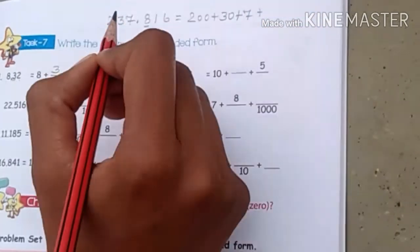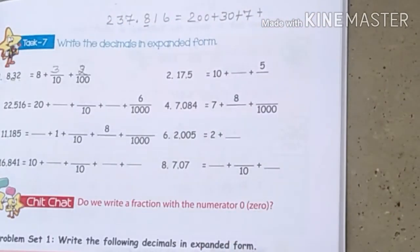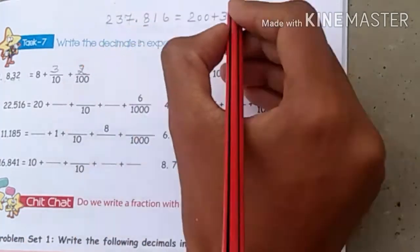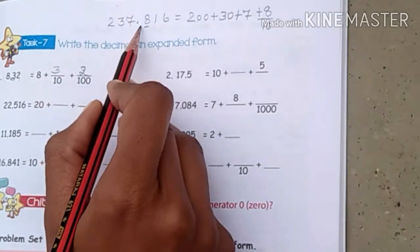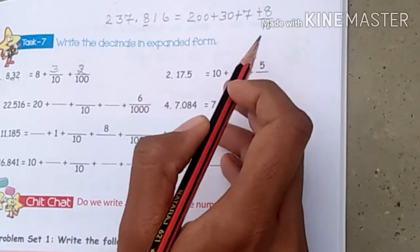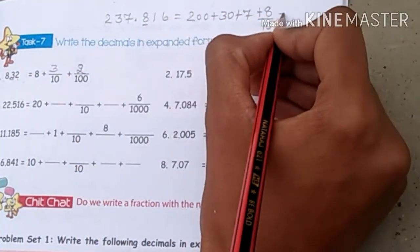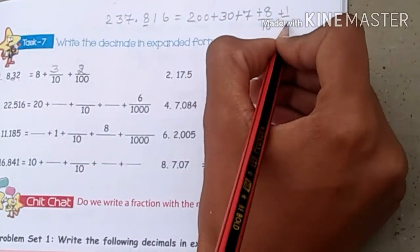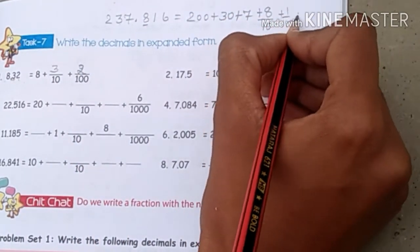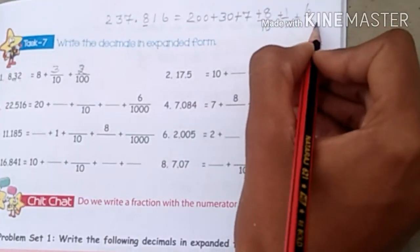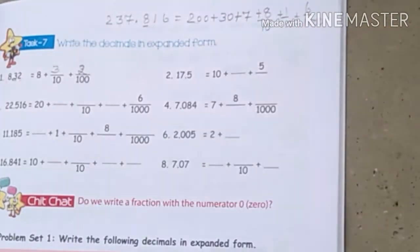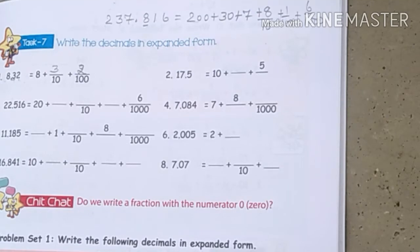After the decimal point, the digits are written in the form of fractions. The first decimal place is tenths, written as the digit upon 10. The second decimal place is hundredths, written as the digit upon 100. The third decimal place is thousandths, written as the digit upon 1000. In this way, it is written in expanded form.